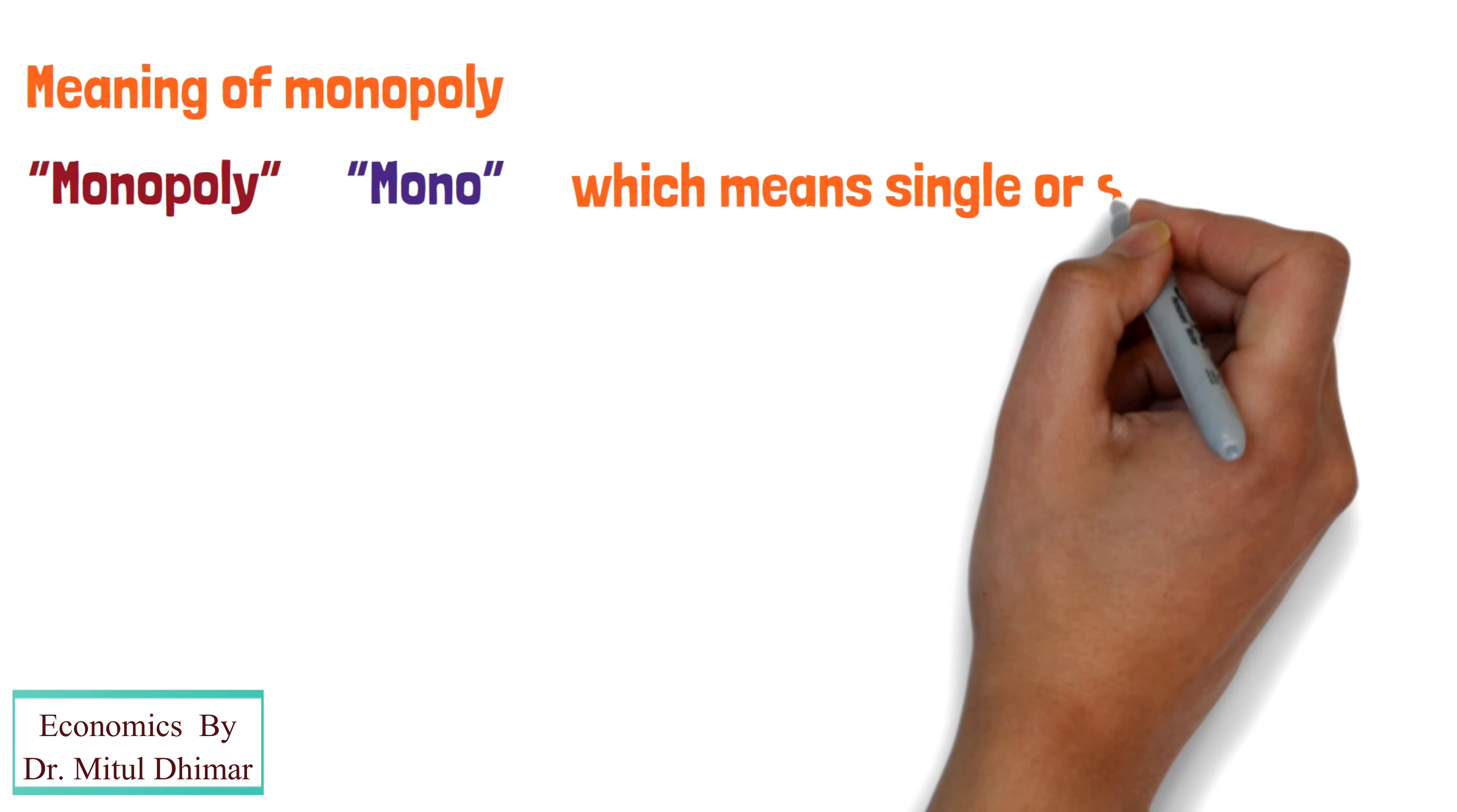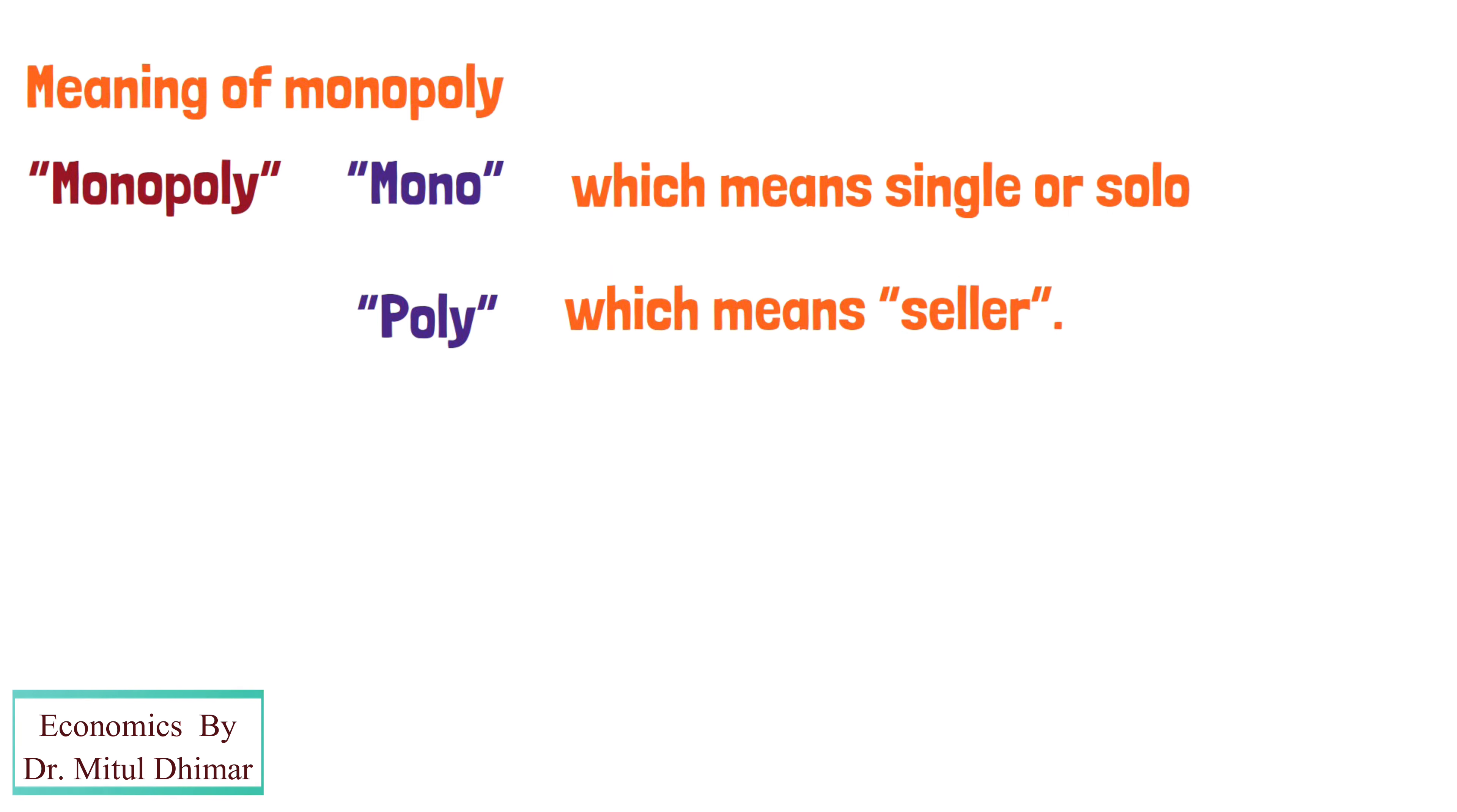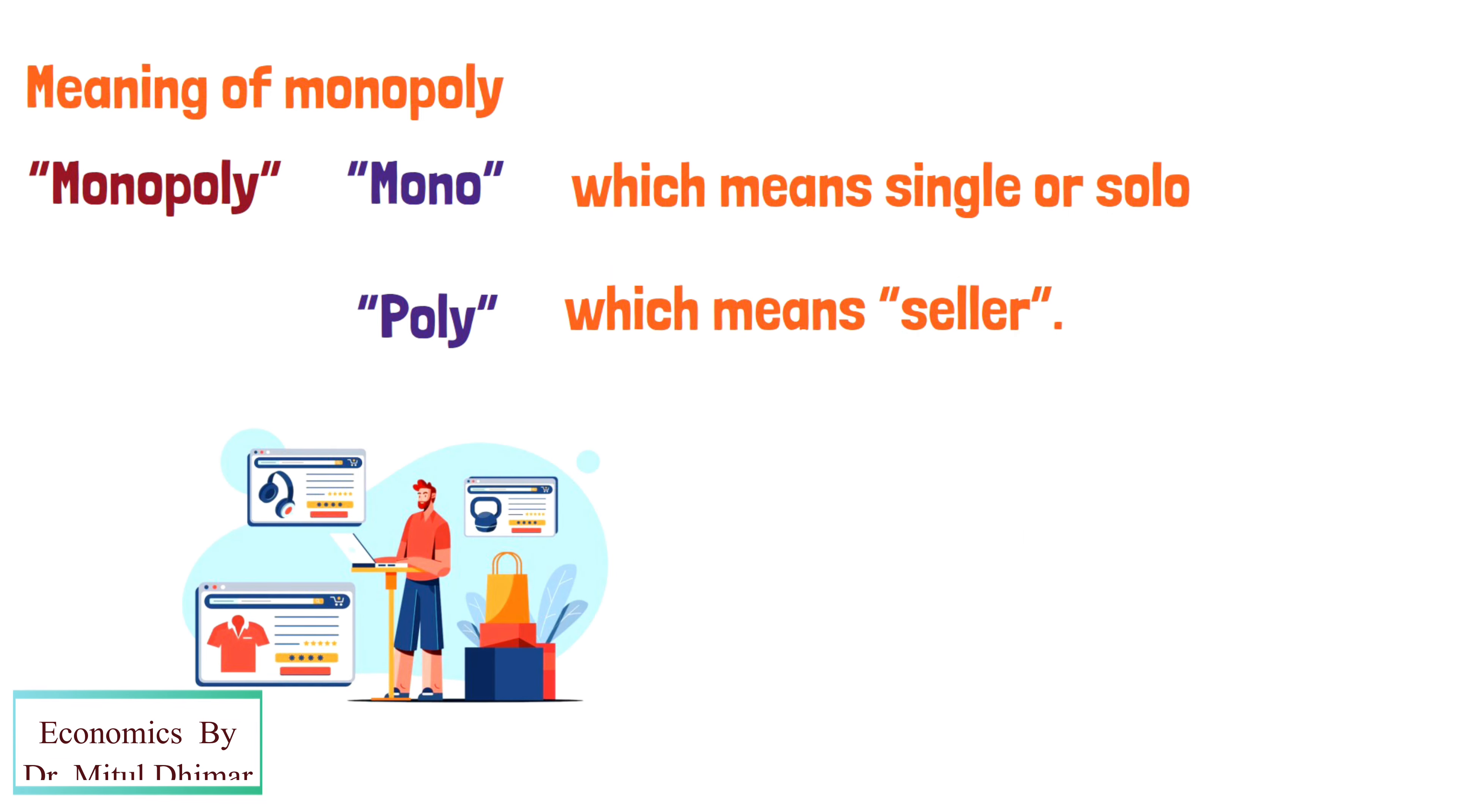If you break up the word monopoly, you get mono which means single or solo and poly which means seller. A market structure characterized by a single seller selling a unique product in the market.